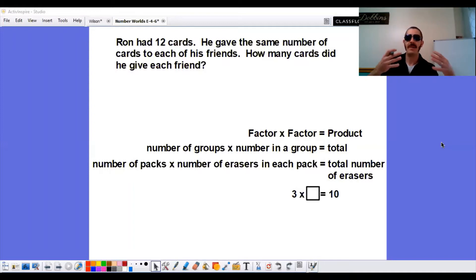It's because it's about taking a total and separating it equally to groups. So in this problem, we have a total of 12. We're separating them into how many friends. The same number to each of his friends.